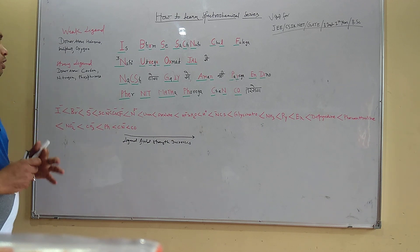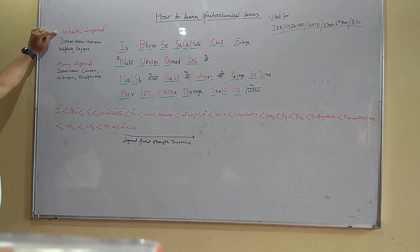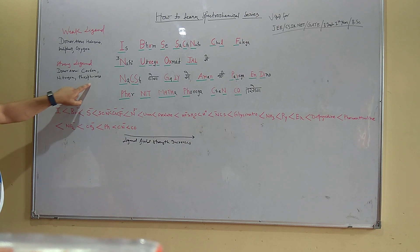In general, not strictly speaking but in general, if the donor atom in a particular ligand is the halogens like chlorine, bromine, iodine, sulfur, or oxygen, then such ligands are the weak ligands. Those ligands in which the donor atom is carbon, nitrogen, and phosphorus are generally the strong ligands.